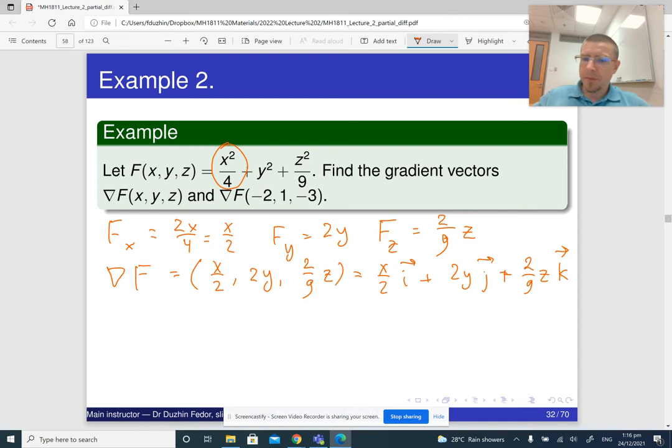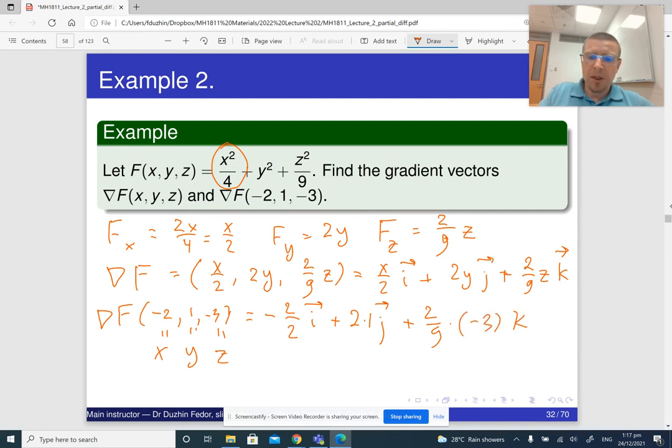In order to compute the gradient at the specific point (-2, 1, -3), we just substitute minus 2 for x, 1 for y, and minus 3 for z. Doing this, we replace x with negative 2: minus 2 over 2 i plus 2 times 1 j plus 2 over 9 times negative 3 k. So we get minus i plus 2j minus 2 thirds k. And that's the answer.